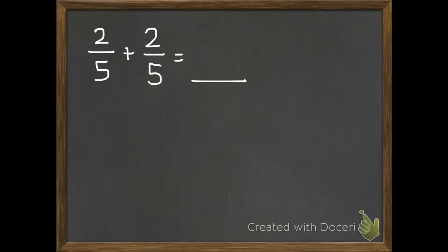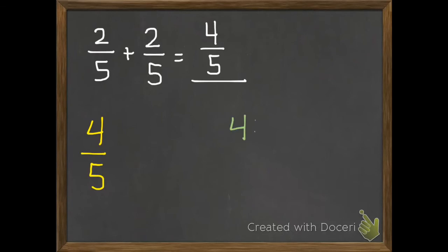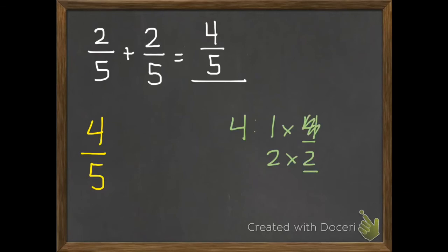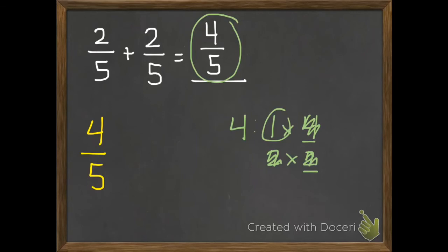Another addition problem: 2 fifths plus 2 fifths equals 4 fifths. We want to make sure this is in simplest form. The factors of 4 are 1 and 4, and 2 times 2. Starting with 4 — my multiples of 4 are 4 and 8, so not 5. My multiples of 2 are 2, 4, 6 — so not 5 either. That leaves us just with 1. If we divide anything by 1, it stays the same, so whenever we get down to 1 we know it already is in simplest form. So 4 fifths is the answer.